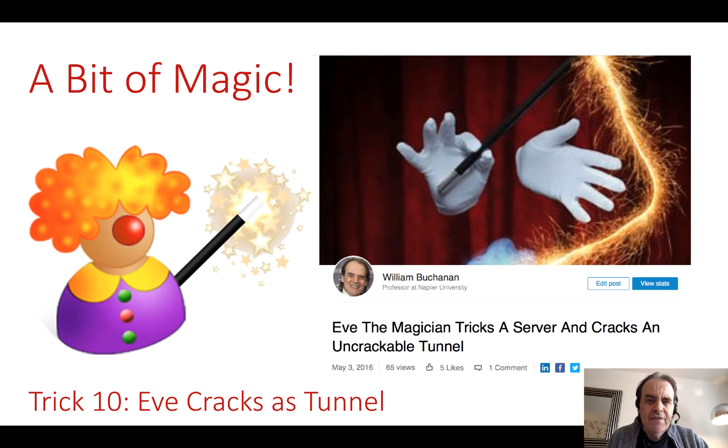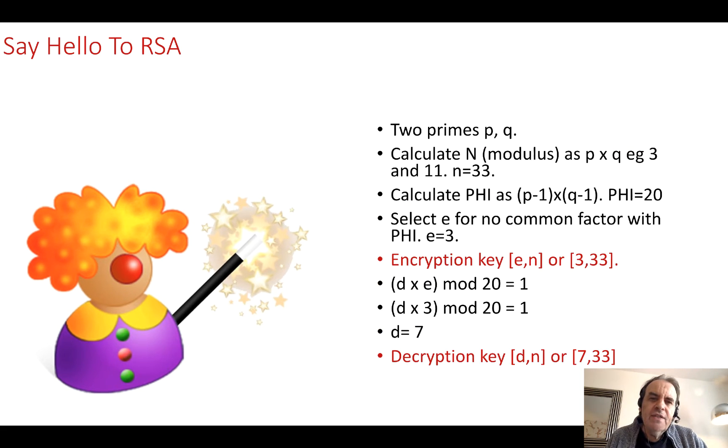Let's have a look at a little bit of Eve magic. In this case, we'll look at some of the weaknesses around SSL. The trick itself is for Eve to crack a tunnel. In this case, the magic is a little bit different in that she's going to do it against the server rather than against Bob and Alice.